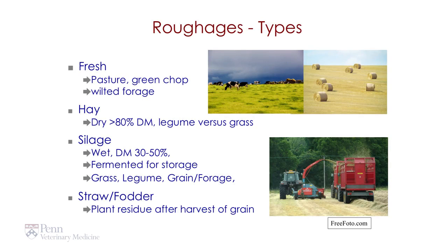So the types: NRC classifies these as fresh roughages like pasture or green chop. Green chop would be material that we cut every day and then feed it to the animals — we offer it to them within the barn. Or a wilted forage where we'll cut it and let it set for about 12 hours to let some of the water come out of it and then feed that to the animals.